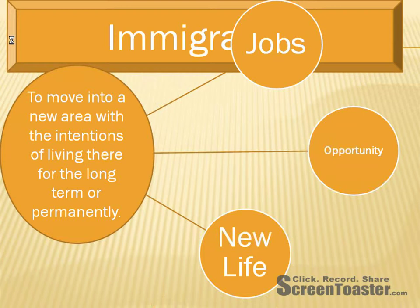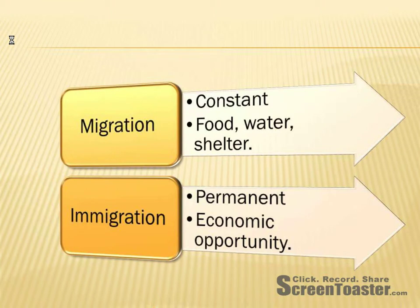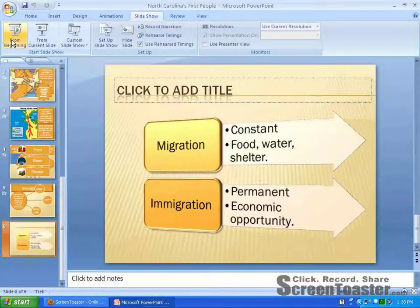Immigration is simply to move into a new area with the intention of living there for the long term or permanently. This is different from migration in the fact that when you immigrate, you move to a new place with the intention of staying there. In migration, you move constantly from place to place. Immigration isn't necessarily from one country to another — it could be from one region to another or even from one city to another. So if you were to move from Beaufort to Moorehead City with the intention of living there for quite a while, that would still be immigration. When you think of migration, think constant — you're constantly moving, looking for food, water, and shelter. With immigration, you're permanently staying, and you could be searching for economic opportunity as one of the reasons why you might immigrate.